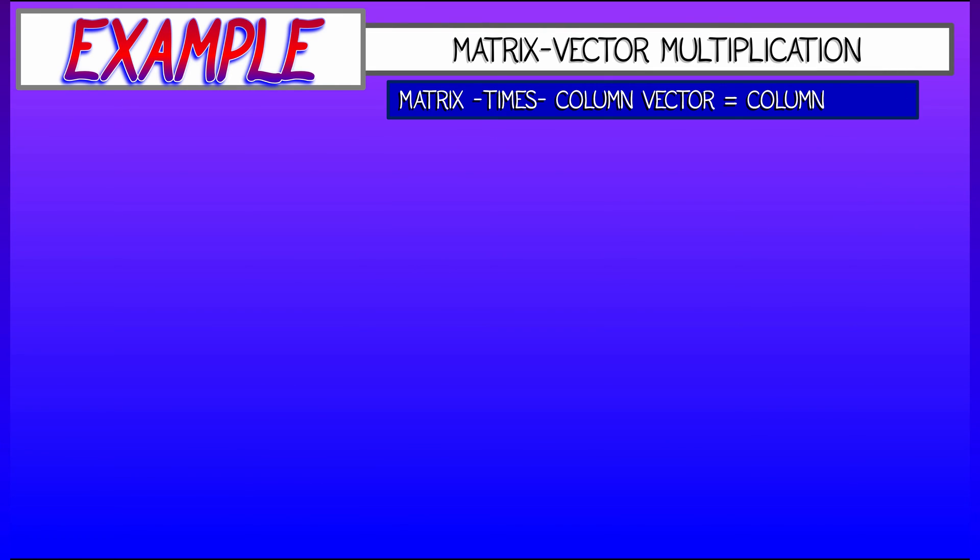One simple example involves matrix vector multiplication. That is, multiplying a matrix times a column vector. And this gives you, again, a column vector in return.